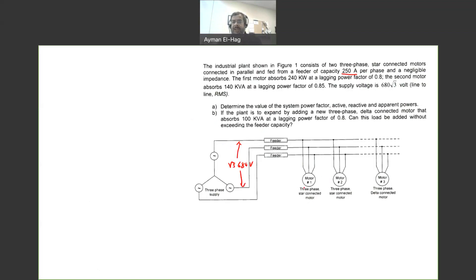So in Part A, we want to find the value of the system power factor, active, reactive, and apparent power. So for these two connected loads, now this load is not connected yet, and this is clear from the dotted line.